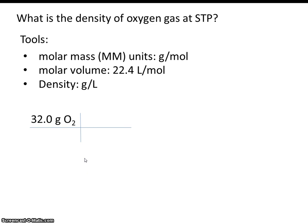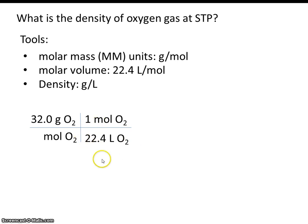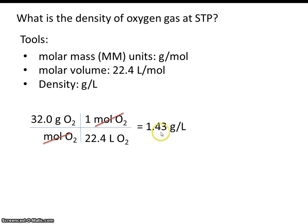The molar mass of oxygen gas is 32.0 grams per mole, so if we have 32 grams of oxygen, we have one mole of oxygen. Also, one mole of oxygen will take up 22.4 liters of space. Looking at this dimensional analysis table, moles in the numerator and moles in the denominator cancel out, and what we're left with is grams per liter — a measure of density. So the answer is 1.43 grams per liter. That's the density of oxygen gas.